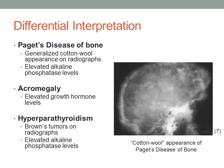Acromegaly involves hyperplasia and ossification of bone, which may cause paresthesia and weakness that could be mistaken for osteopetrosis. It can be removed from the differentials based on blood tests showing elevated growth hormone levels. Finally, hyperparathyroidism is associated with bone pain, headaches, and other neurological changes. Radiographic findings of Brown's tumors and radiolucencies, along with increased alkaline phosphatase levels, will differentiate hyperparathyroidism from osteopetrosis.